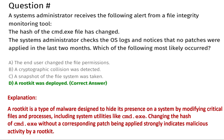The correct answer is option D, a rootkit was deployed. A rootkit is a type of malware designed to hide its presence on a system by modifying critical files and processes, including system utilities like cmd.exe. Changing the hash of cmd.exe without a corresponding patch being applied strongly indicates malicious activity by a rootkit.